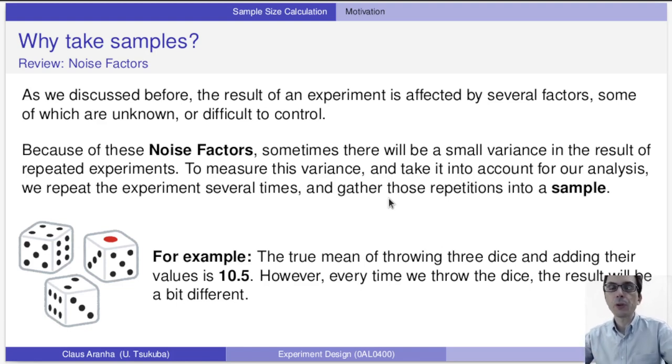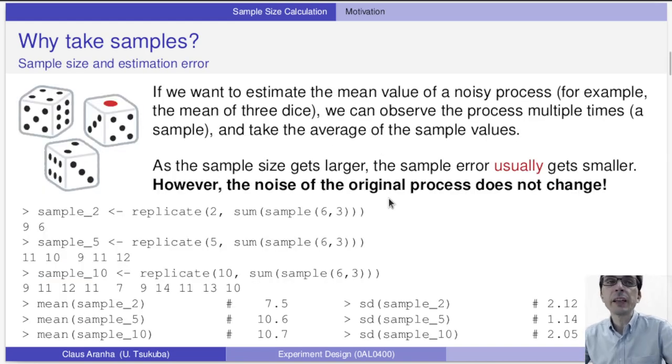For example, if we know what is the mean of throwing a dice, what is the mean expected value of throwing a dice? If we throw the dice only one time, maybe there's a three, maybe there's a one, maybe there's a six. That's not the mean expected value, right? If we throw three dice and add the values, the true mean is 10.5. But every time we throw the dice, the result will be a little bit different. So if we want to estimate the mean value of a noisy process, like throwing the dice, we can observe the process multiple times, which is a sample, and take the average of the sample values.